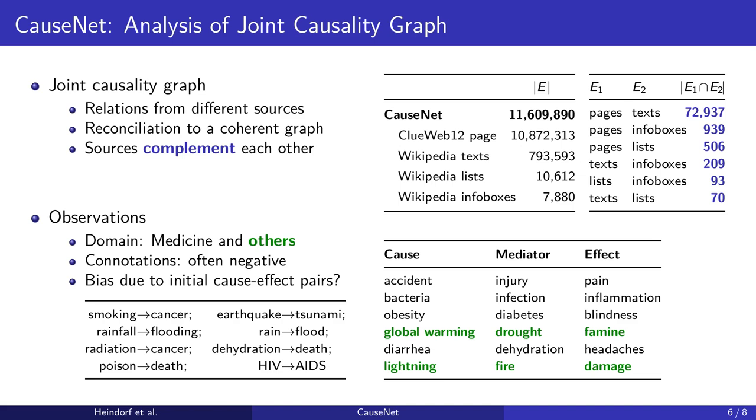Moreover, we made the observation that many causal concepts in our graph have a negative connotation. Nevertheless, our graph also contains relations such as love causing happiness or teamwork causing success.